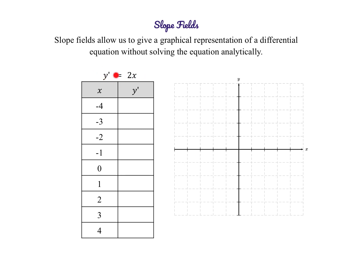Here we have an explicit differential equation, so it's just in terms of x. Plugging in x values from negative 4 to 4 gives slopes of negative 8, negative 6, negative 4, negative 2, 0, 2, 4, 6, and 8. When x is negative 4, the slope is negative 8 along that entire vertical line, so we draw a very steep tick mark. For negative 3 the slope is negative 6, slightly less steep, and so on — you're just estimating the slope of each tick mark.